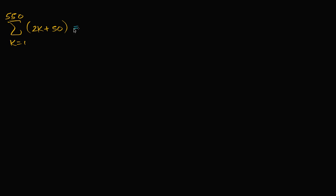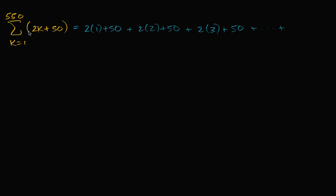So this is going to look like: when k is equal to one, this is going to be two times one plus 50. When k is equal to two, it's going to be two times two plus 50. When k is equal to three, it's going to be two times three plus 50. And we're going to keep going all the way until we get to the last term. When k is equal to 550, it's going to be two times 550 plus 50.